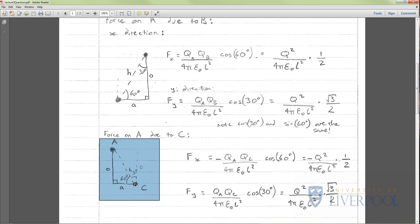When we calculate the force in x direction, the force in the x direction is going to be negative because it's going to the left instead of to the right, so we put that negative sign in there. The magnitude of the force is QA times QC over 4πε₀L². Because the magnitudes are the same we can combine those, and it's cos 60 again. Overall we get the magnitude of the force in the x direction on A due to C is negative Q² over 4πε₀L² times a half.